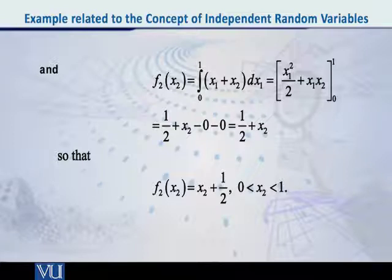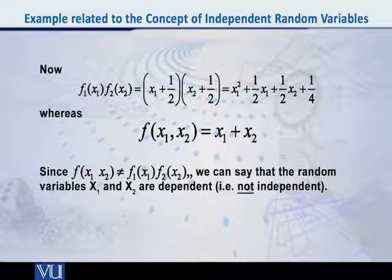Now that we have got both of the marginal pdfs, let us multiply them and find out what we get. If this product is exactly equal to f(x₁, x₂), then of course we can say that the random variables x₁ and x₂ are independent. But if they are not equal, then we cannot say that. So let us see what we get: x₁ plus 1/2 multiplied by x₂ plus 1/2 equals x₁x₂ plus 1/2 times x₁ plus 1/2 times x₂ plus 1/4.